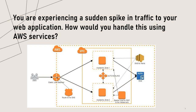You are experiencing a sudden spike in traffic to your web application. How would you handle this? I would use Auto Scaling to automatically add additional Amazon EC2 instances to handle the increased load. I would also use Amazon CloudFront to cache static content and serve it from edge locations, reducing the load on my web application. Additionally, I would use Amazon ElastiCache to cache frequently accessed data and Amazon DynamoDB to handle any additional database capacity requirements.